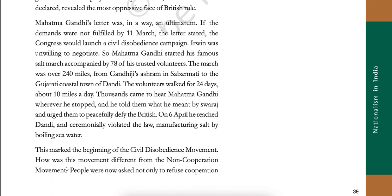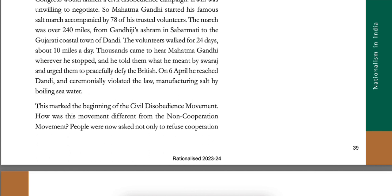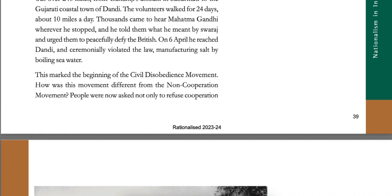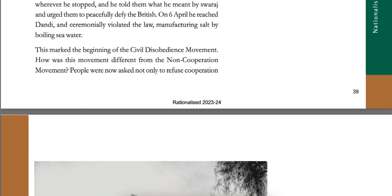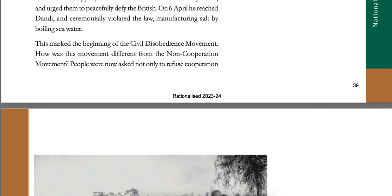Mahatma Gandhi's letter was, in a way, an ultimatum. If the demands were not fulfilled by 11 March, the Congress would launch a civil disobedience campaign. Irwin was unwilling to negotiate, so Mahatma Gandhi started his famous salt march accompanied by 78 of his trusted volunteers. The march was over 240 miles from Gandhiji's ashram in Sabarmati to the Gujarati coastal town of Dandi. The volunteers walked for 24 days, about 10 miles a day. Thousands came to hear Mahatma Gandhi wherever he stopped, and he told them what he meant by Swaraj and urged them to peacefully defy the British. On 6 April, he reached Dandi and ceremonially violated the law, manufacturing salt by boiling seawater. This marked the beginning of the civil disobedience movement.